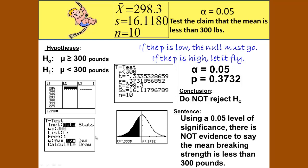Our sentence is the same as we got with the classical approach. Using a 0.05 level of significance, there is not evidence to say that the mean breaking strength is less than 300 pounds.